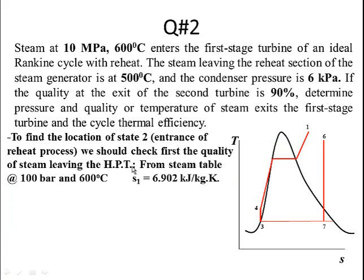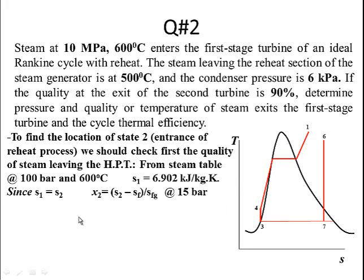We now need to find the location of state 2, which is the entrance of the reheat process. However, we don't know where state 2 is located — it could be in the superheated region, in the wet region, or even on the saturated vapor line. We can determine this using the dryness fraction expression for state 2.